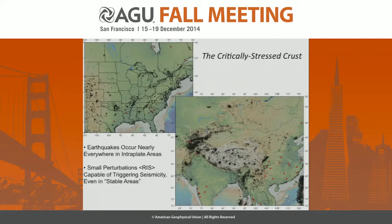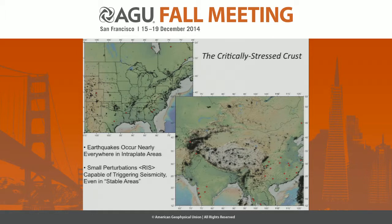We have earthquakes everywhere through intraplate areas, and there's a long history of small perturbations — such as associated with the impoundment of reservoirs — triggering seismicity in areas that have relatively little background activity, such as the Canadian shield or the Indian shield. Basically, stresses are high everywhere. The rate of seismicity is not an indication of stress in the crust; it's an indication of how fast the crust is deforming via brittle faulting in the upper crust.